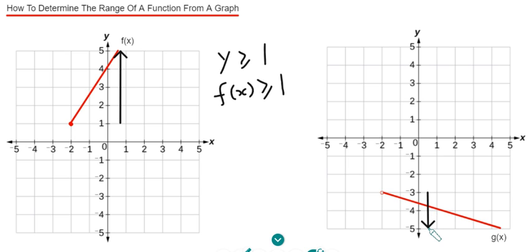And then it's all the values which are smaller than minus 3. So again we can either write it down as y is smaller than minus 3, or we can use the function notation and put g of x instead of y. And so again less than minus 3.